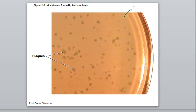These holes in the lawn are called plaques. That plaque is an area where there is no longer any E. coli. It's a place where that phage has lysed, where you had one original phage that has produced more phages. It's an empty spot in the bacterial lawn.